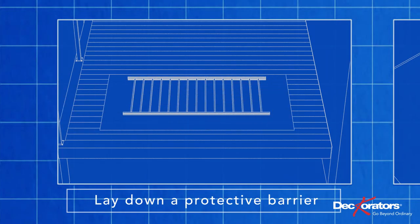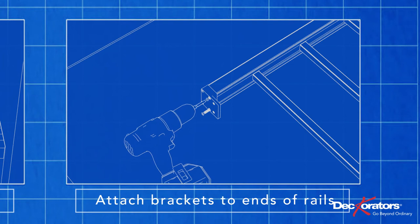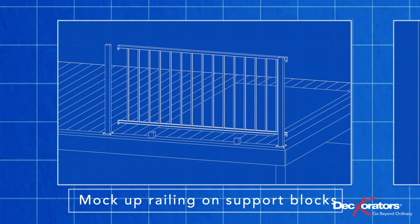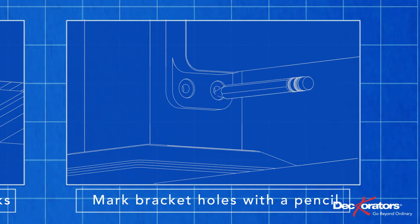Place a protective surface, such as cardboard, underneath your railing to prevent scratching the deck. Using the supplied screws, attach the brackets to the ends of the railing. With 3-inch support blocks in place between the posts, mock up the railing. Mark the bracket holes on both posts with a pencil.